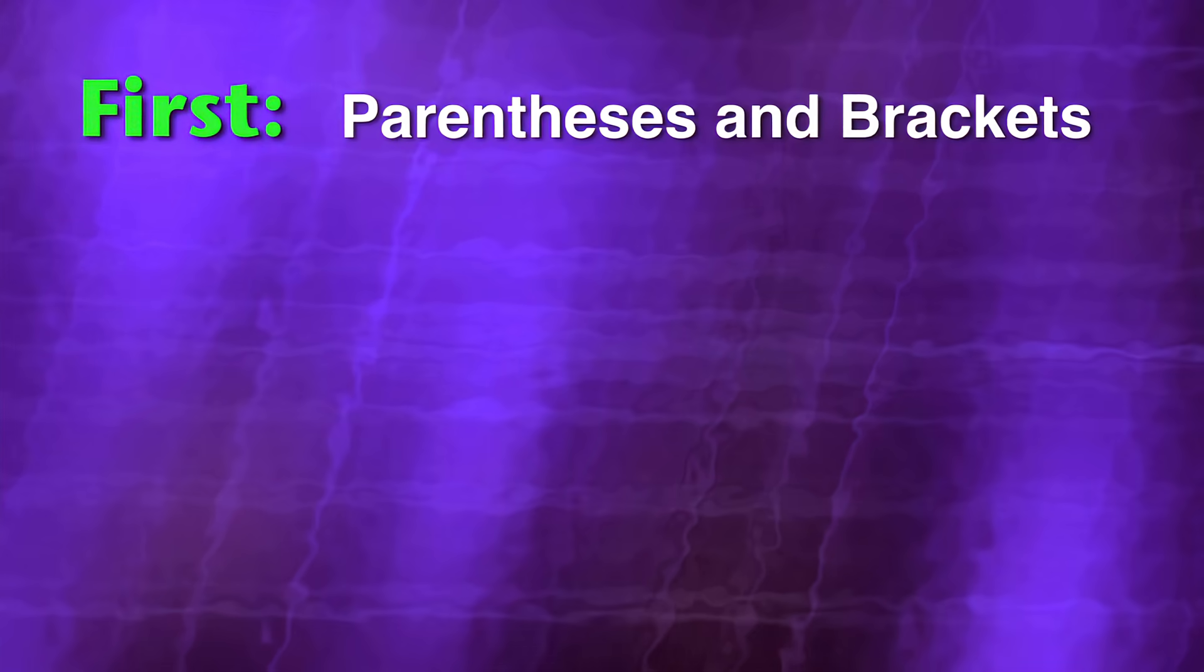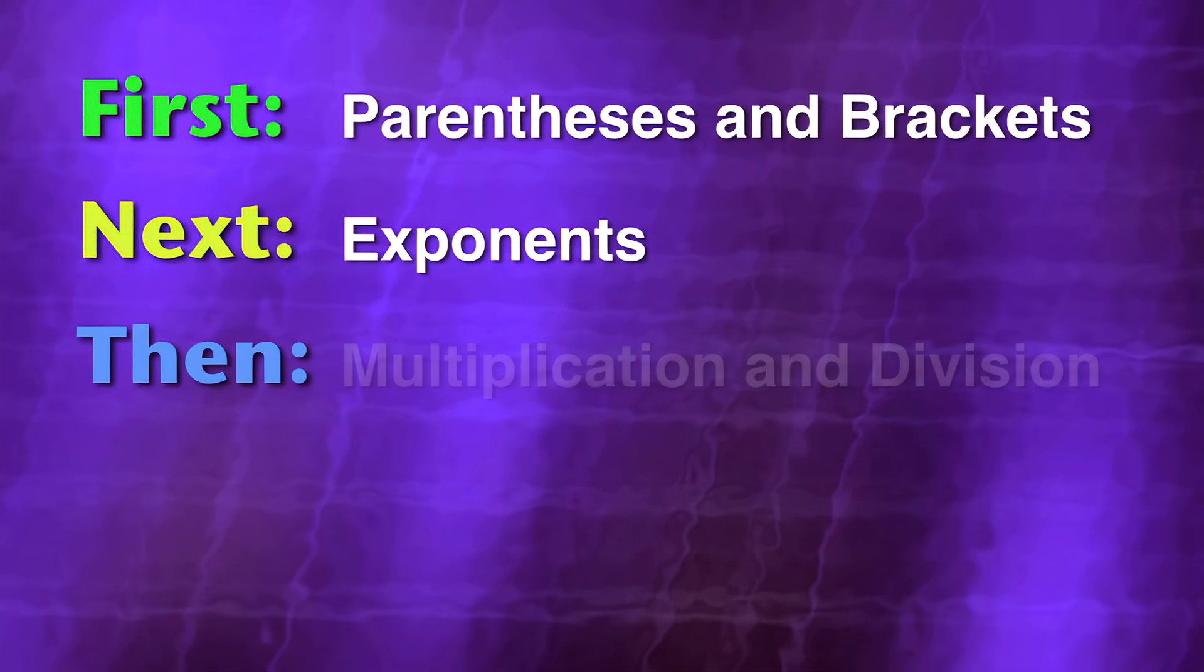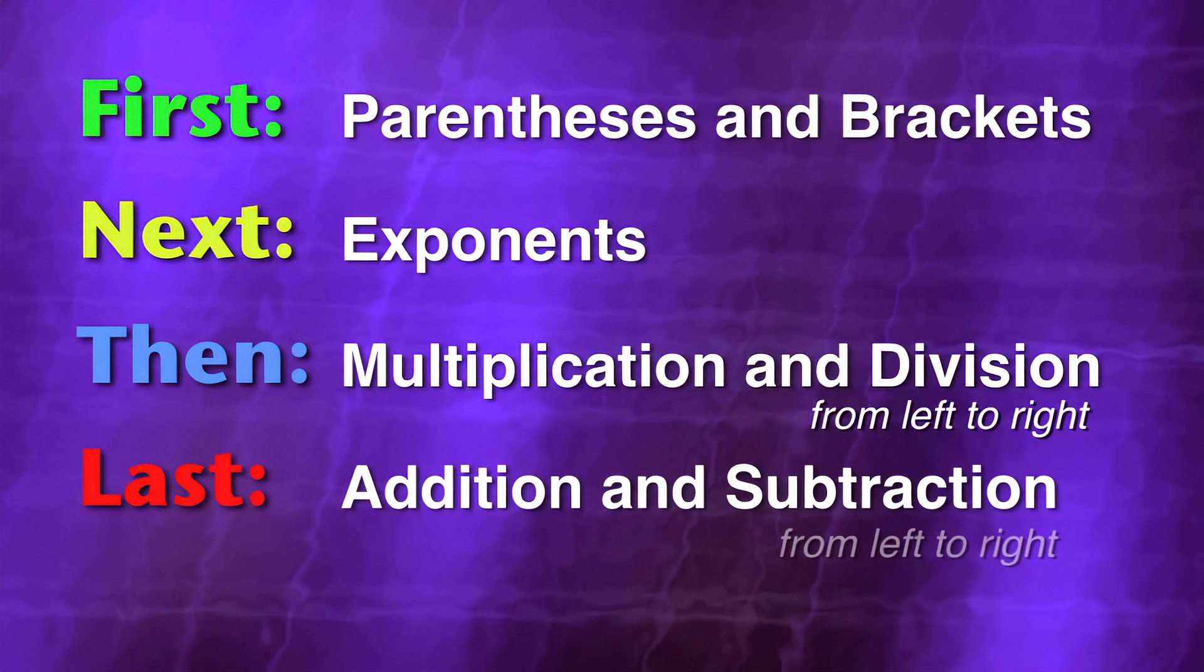Alright, we're just about done, but let's have one more look at all four of our rules before you start practicing with the exercises. The order of operations rules say... First, do operations in parentheses in brackets. Next, do exponents. Then, do multiplication and division from left to right. Last, do addition and subtraction from left to right.